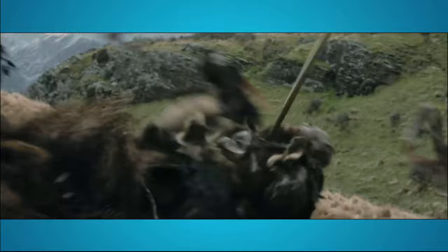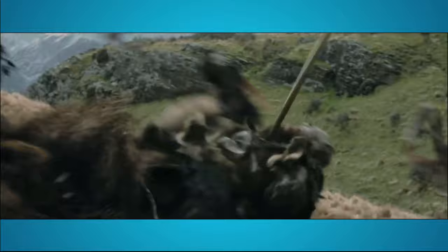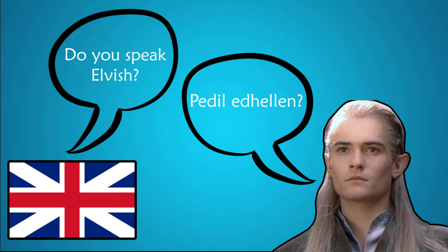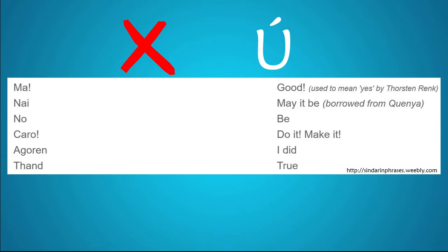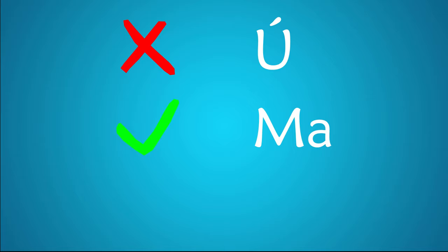At this point, Legolas will probably ask you if you actually speak elvish. When he asks 'Pedile te len,' you can answer no — 'u' — or yes — 'ma.' There isn't one direct word for yes, but 'ma' is really close. If you want to say 'a bit' or 'maybe,' a really close word to that is 'nai,' which literally means 'may it be.'